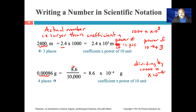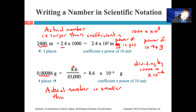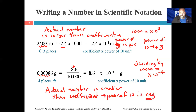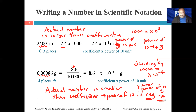We moved the decimal point four places. Here, the actual number is smaller than the coefficient, so the power of 10 is negative. Because 0.00086 is smaller than 8.6, the power of 10 is minus four. Therefore, 0.00086 grams written in scientific notation is 8.6 times 10 to the minus four grams.